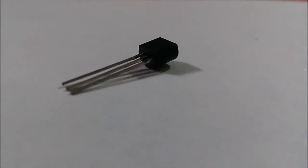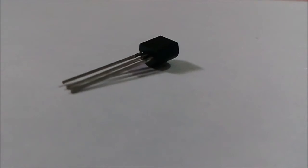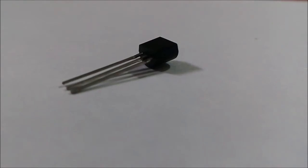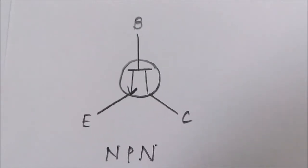A transistor is an electronic device which is used for amplification and switching. There are two types of transistor: NPN transistor and PNP transistor. Transistors have three terminals: collector, emitter, and base. This is the symbol of the NPN transistor.